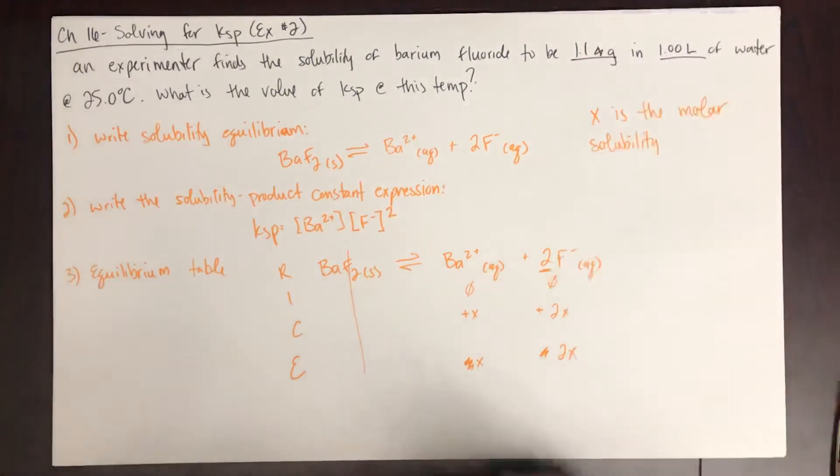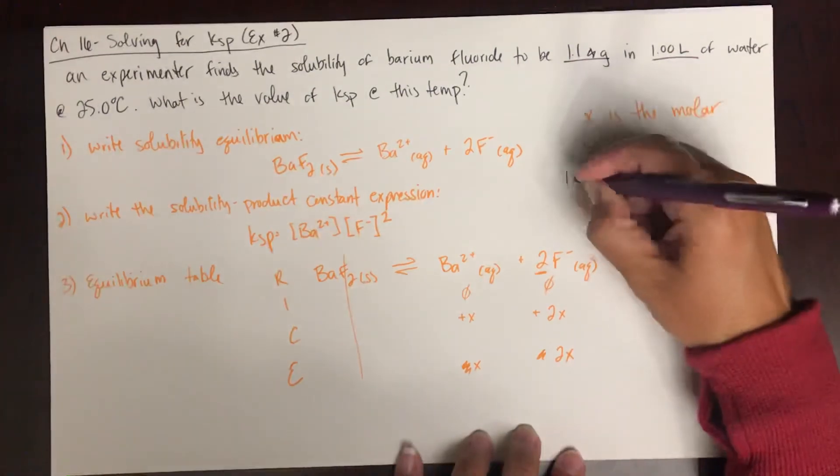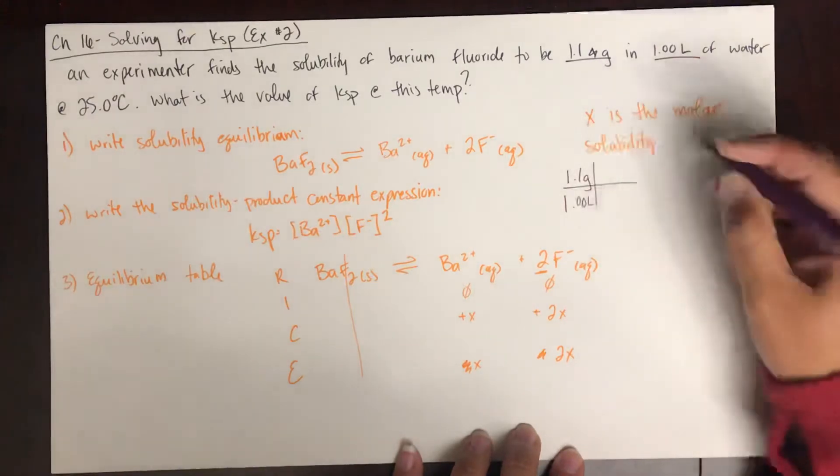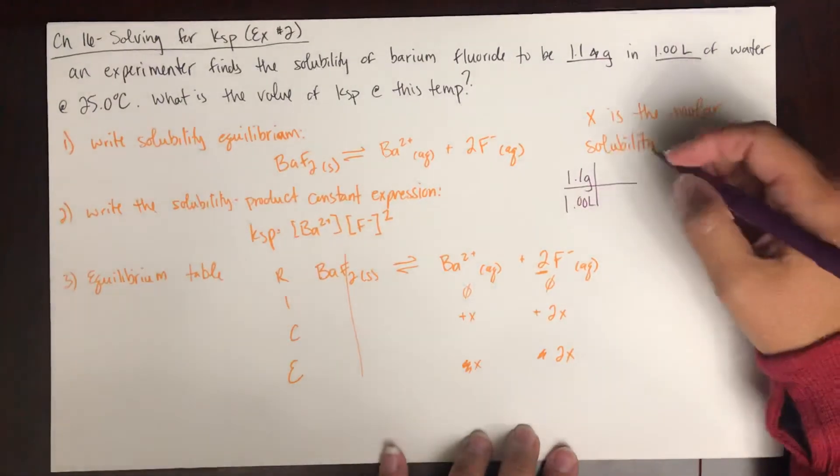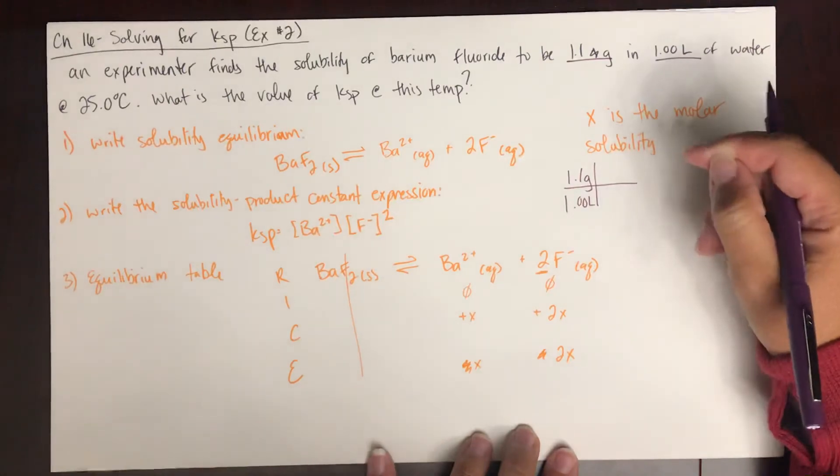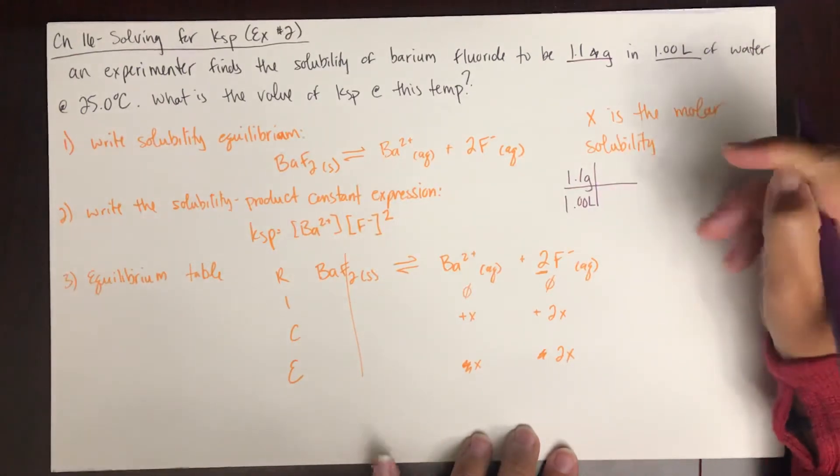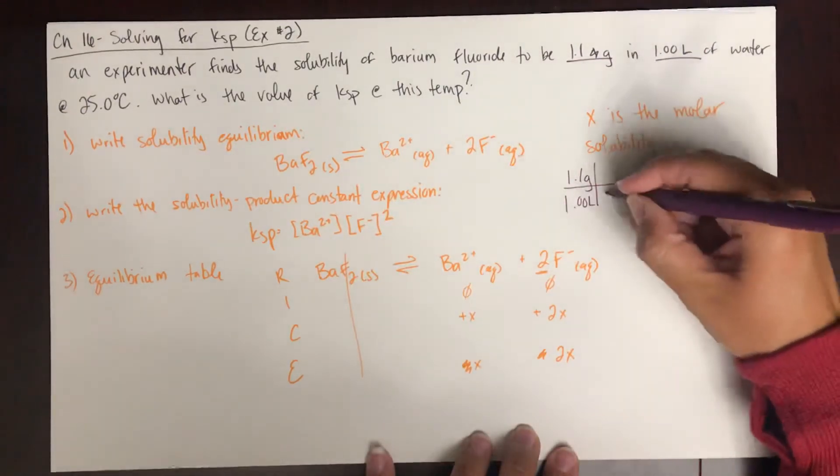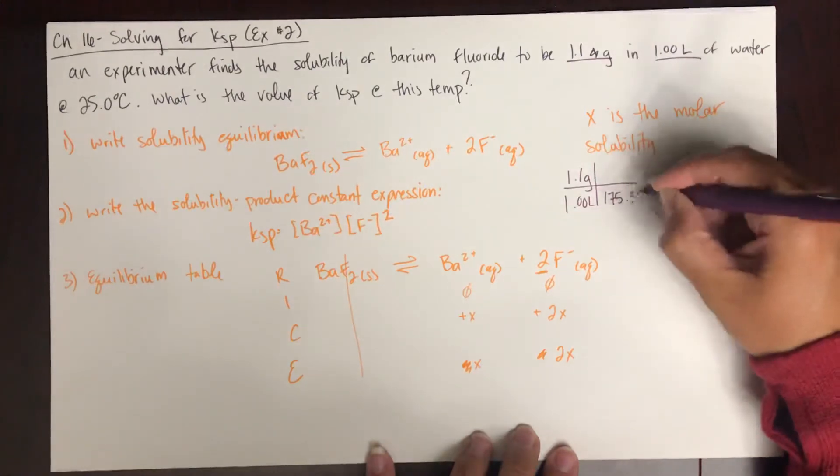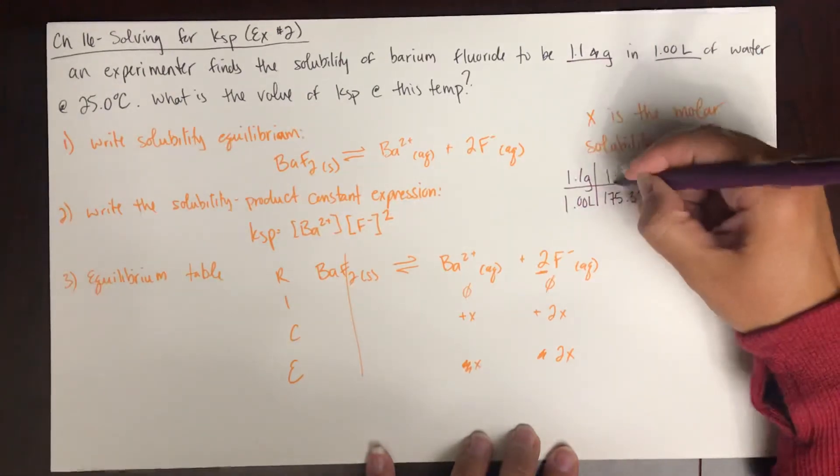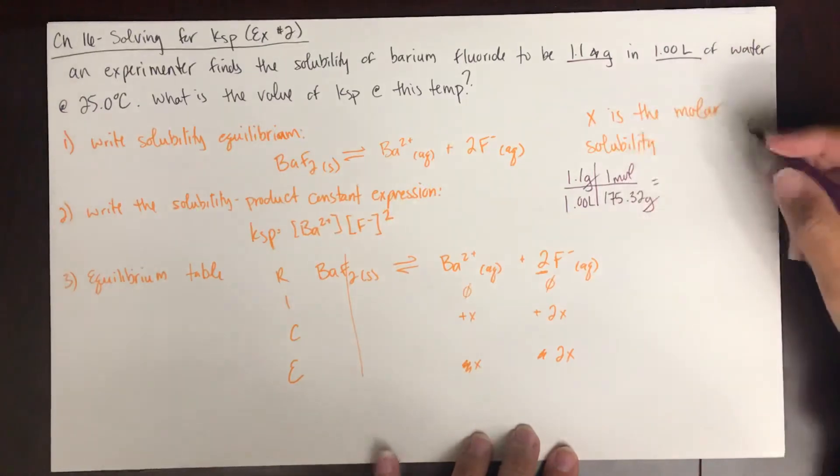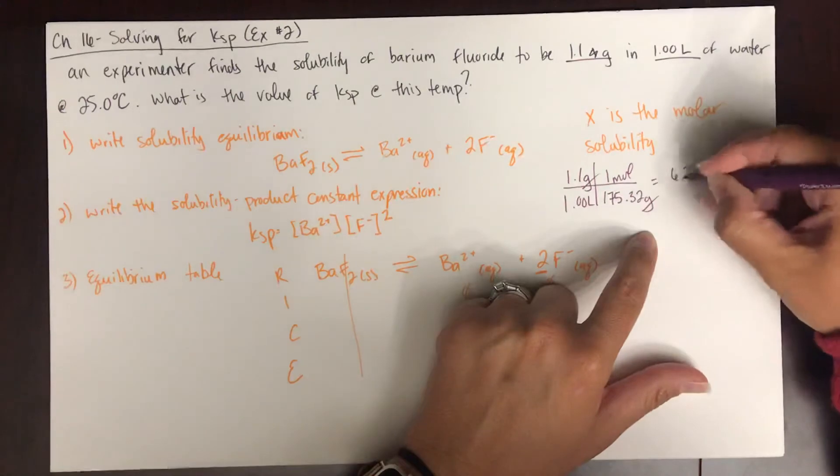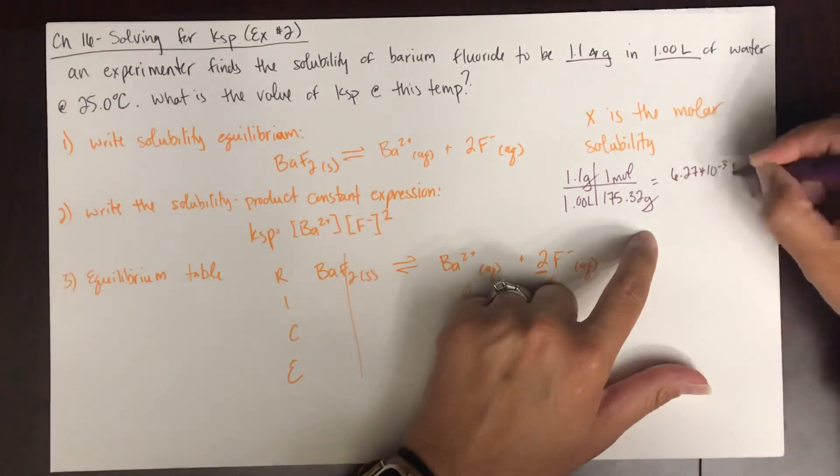1.1 grams in 1.0 liters. So we need to convert that. 1.1 grams in 1.00 liters. And when you use the periodic table and look up the molar mass of barium and the molar mass of fluorine, you see that the molar mass of barium fluoride is 175.32 grams in one mole. Grams will cancel. And now you have a molarity, moles per liter, of 6.27 times 10 to the negative third molar.